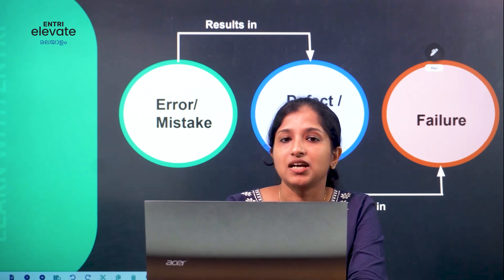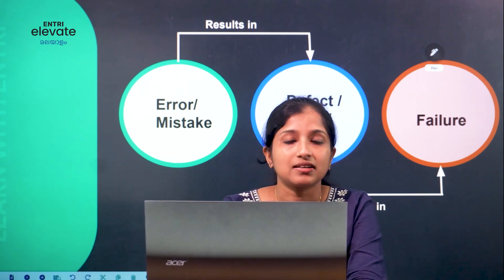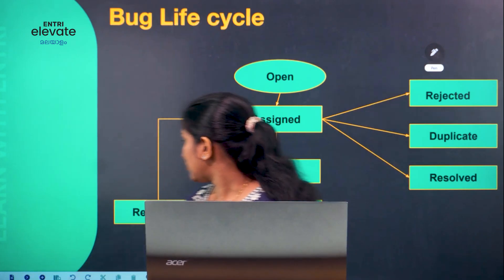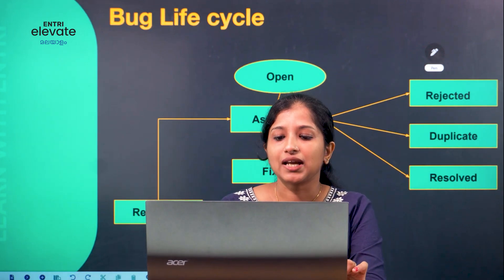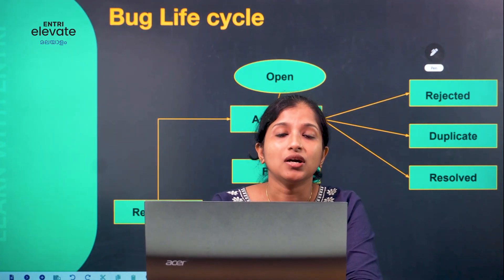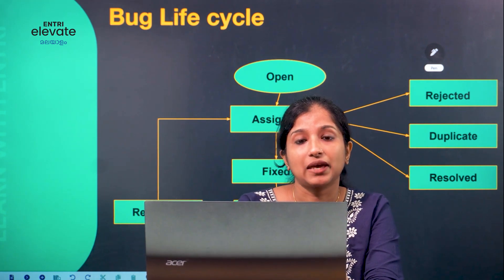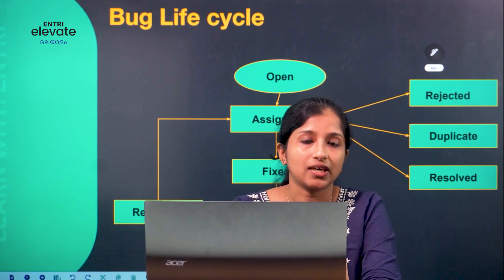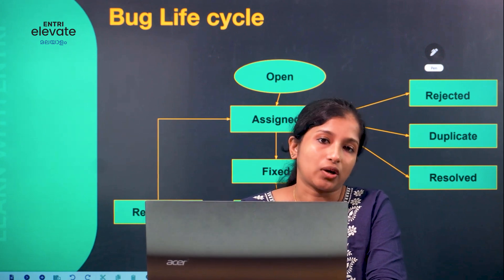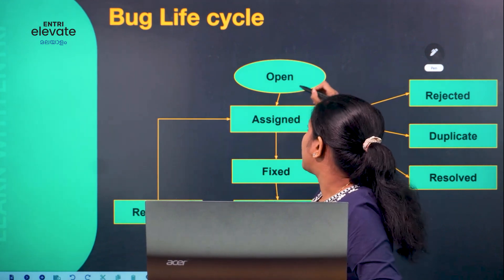Because of the defect, the customer experiences a problem. For example, in the bug life cycle: as a QA engineer testing an application, if the product is not working as per the expected behavior in a particular test case, we will report a defect. This particular defect is now in an open state.